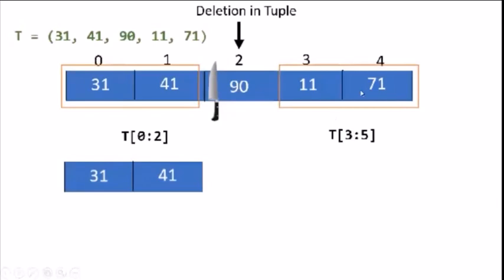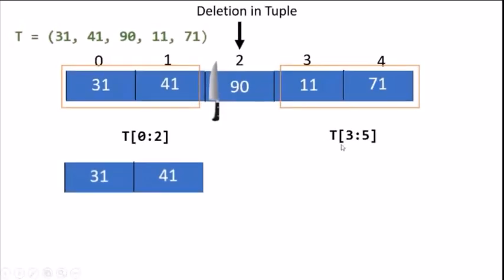We will slice the right side of the element. T is the name in the square bracket and the starting index is 3 and the stop is 5. So 3 and 4 are in this slice and you will get the right side part.